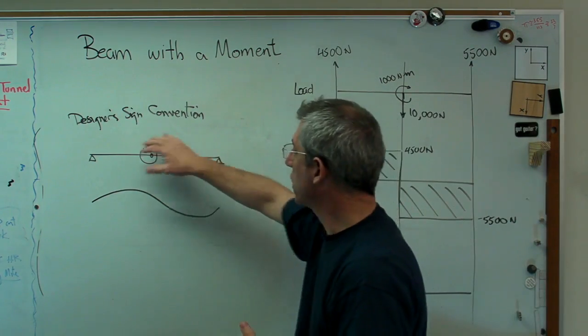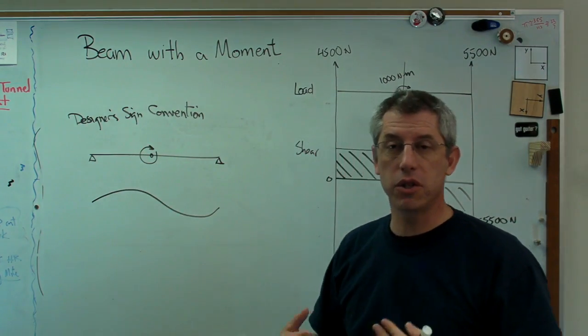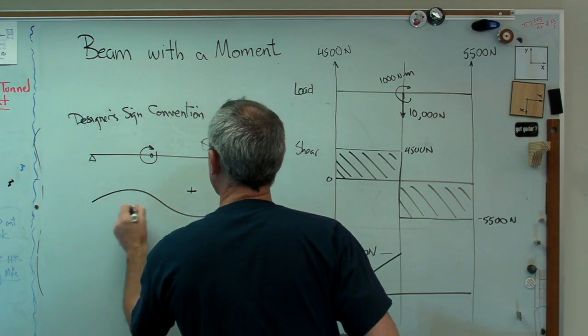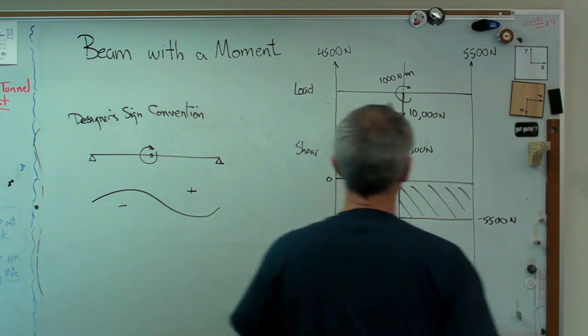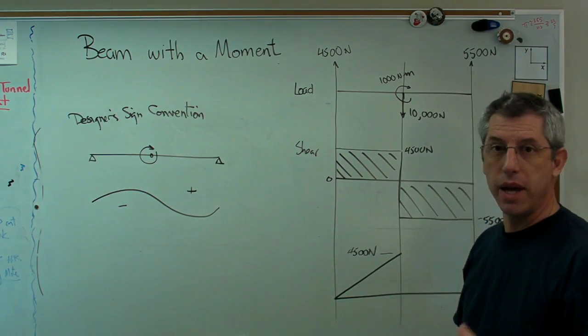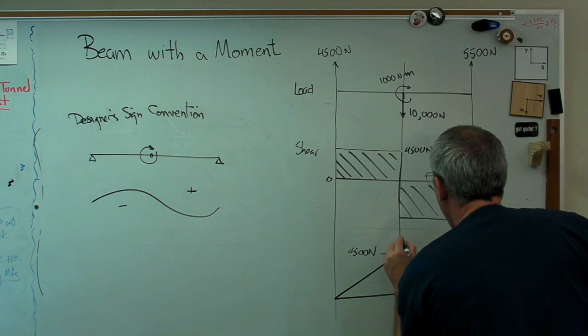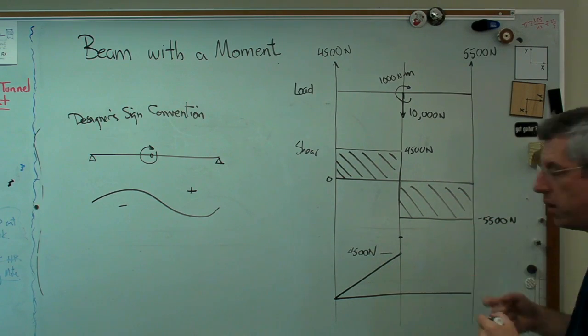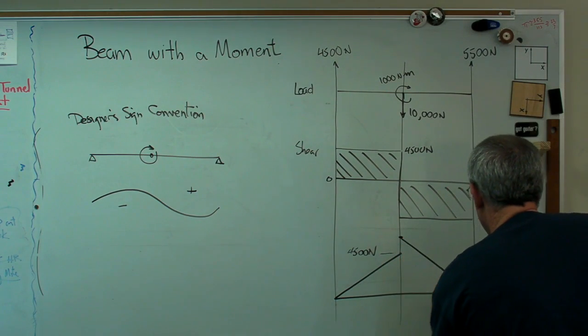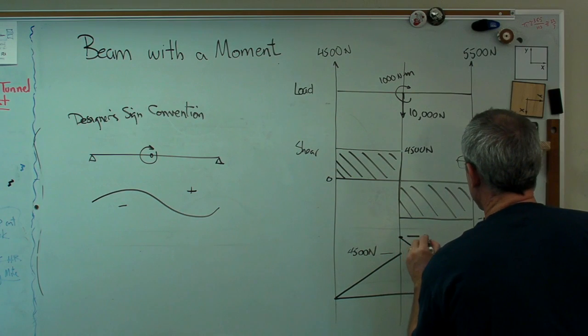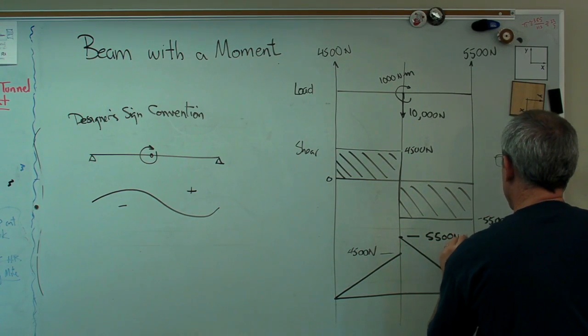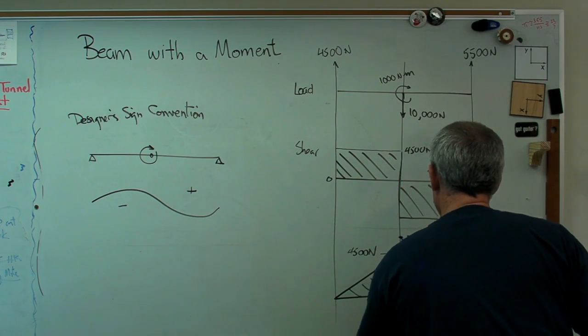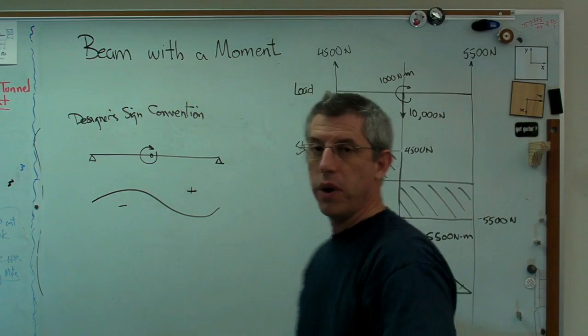Designer's sign convention because designers who are communicating with each other had to standardize somehow or they will wind up getting the wrong answer. So that's positive over there. That's minus over there. We go left to right. So that point moment, that 1,000 newton meter point moment moves me up to right there. And now I've got minus 5,500 times 1 meter brings me back down to 0. That's 5,500 right there. So there's what the load shear moment diagram looks like with a point moment.